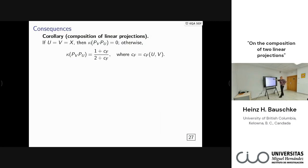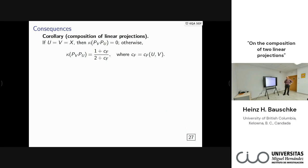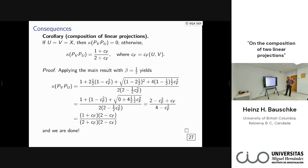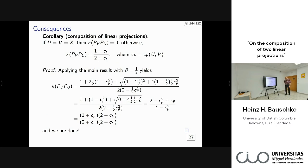Now we revisit the composition of two linear projections. Excluding the trivial case where both U and V are everything (giving the identity with modulus zero), the formula for kappa(P_V ∘ P_U) is (1 + c_F) / (2 + c_F) — beautifully simple and memorable. This comes from the main result by plugging in beta = 1/2. You simplify, factor the polynomials, cancel the (2 - c_F) factor, and you're done.